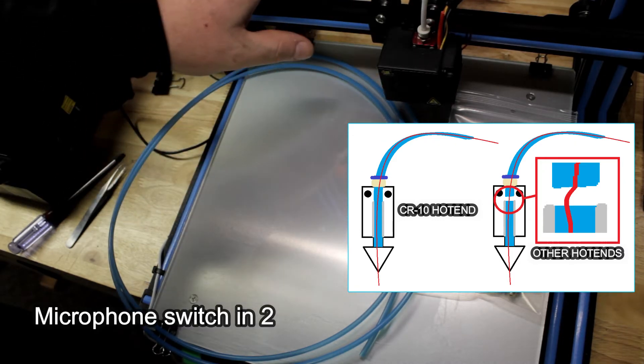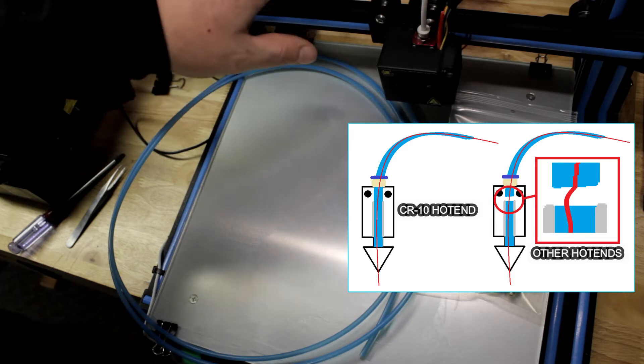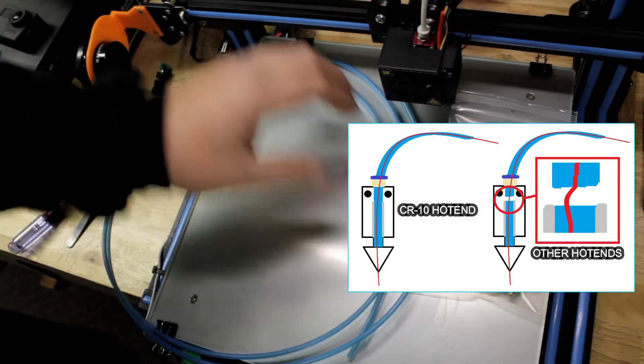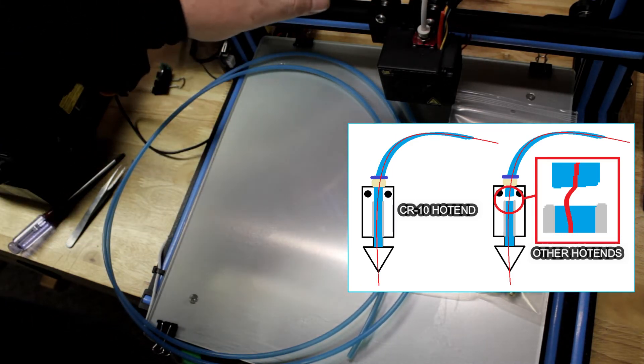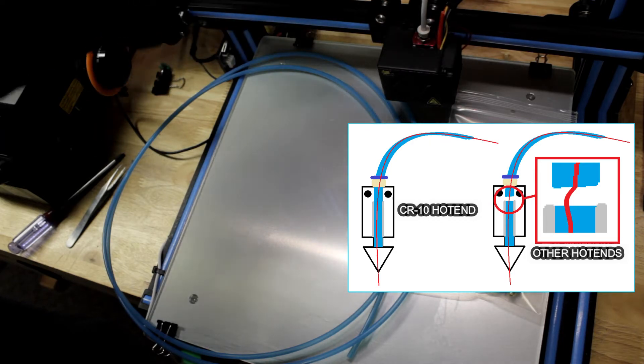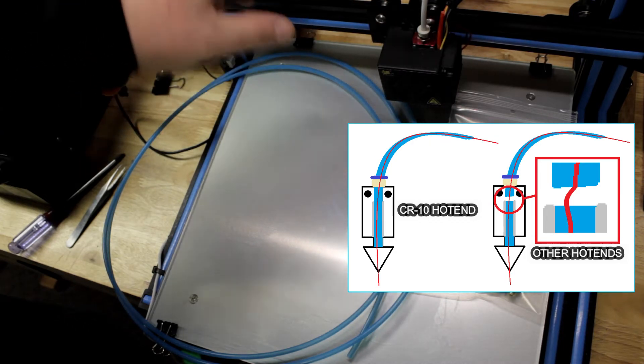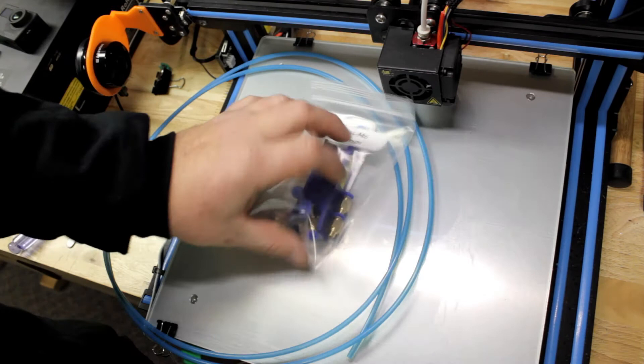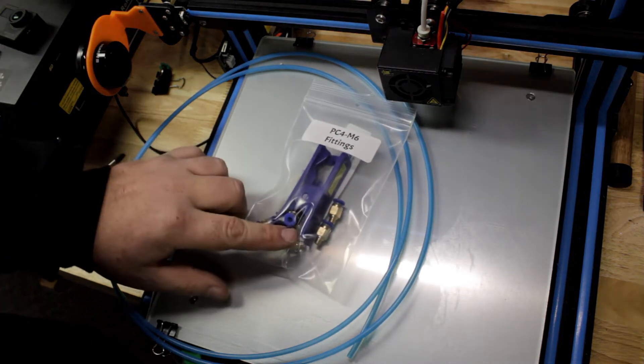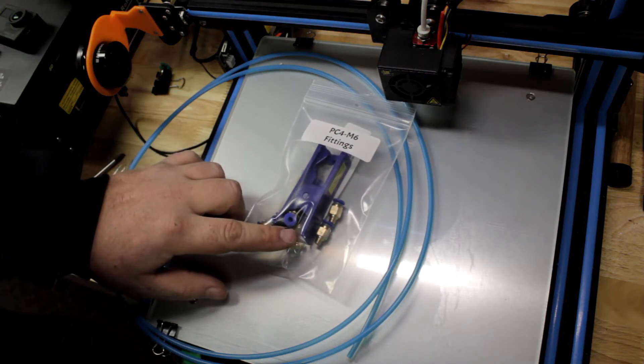But what I'm going to do is I'll probably throw on about the same length of PTFE. I might give it about another half an inch or so, 12 millimeters or so, just a little bit more. And then I'll replace the current fittings with these fittings that came straight from Capricorn. So let's let her rip.